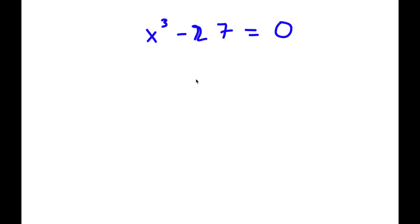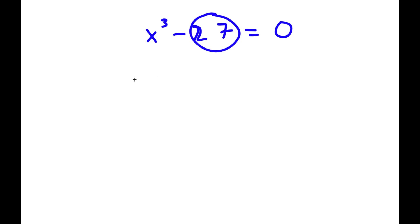So in this problem, I have x to the power of 3 minus 27 is equal to 0. To solve this, I'm going to first rewrite 27 as 3 to the power of 3. So now I have x to the power of 3 minus 3 to the power of 3 is equal to 0.